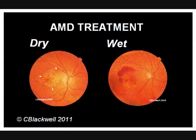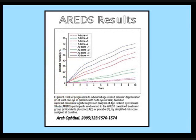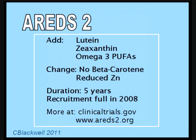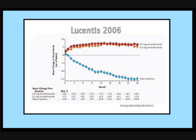Now that you have seen how macular degeneration comes about, let's talk about treatment. For dry AMD, AREDS-1 showed that taking extra antioxidant vitamins and the mineral zinc significantly slows the progress of AMD, but doesn't reverse any changes. A follow-up study, AREDS-2, has added lutein, zeaxanthin, and omega-3 polyunsaturated fatty acids, while removing beta-carotene and lowering the amount of zinc. This is a five-year study that closed recruitment in 2008. Treatment of wet AMD made a great leap with the VEGF inhibitors Avastin and Lucentis — instead of the usual progressive loss, vision could stabilize or even sometimes improve. Details of these treatments are covered in the previous videos.